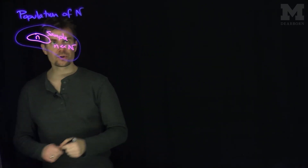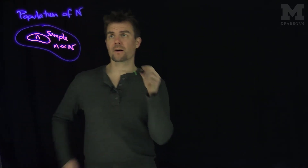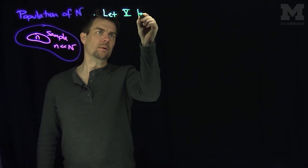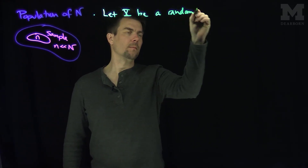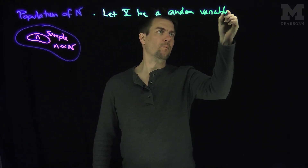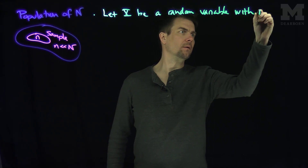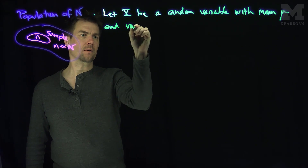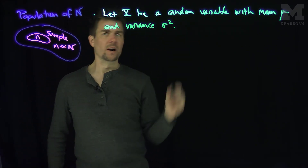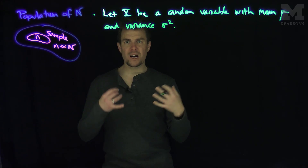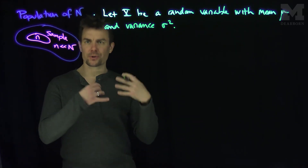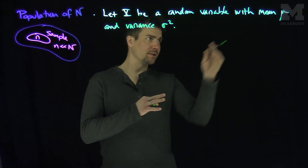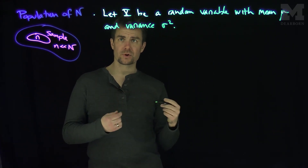We're trying to figure out some properties of a random variable. Let x be a random variable with mean μ and variance σ². We're assuming that x is measuring some characteristic of every person in this population, and they are all standardized in the sense that they all have mean μ and variance σ².